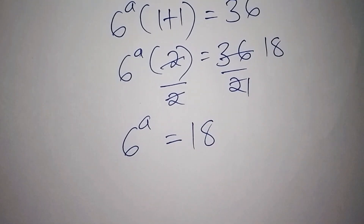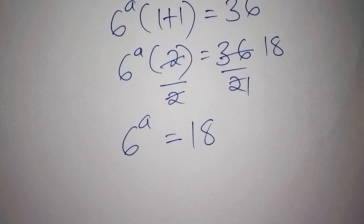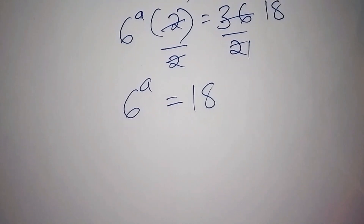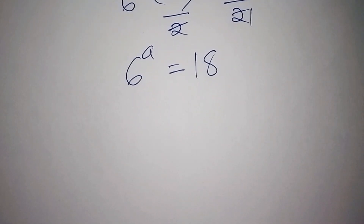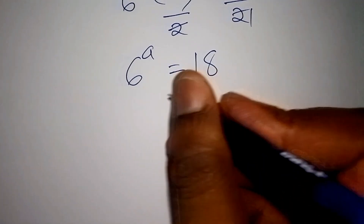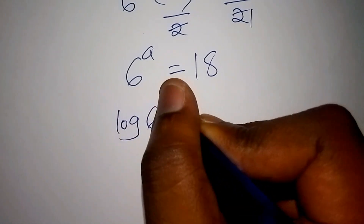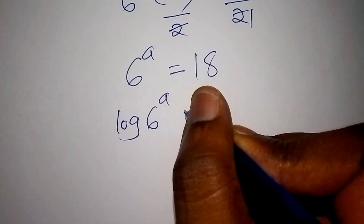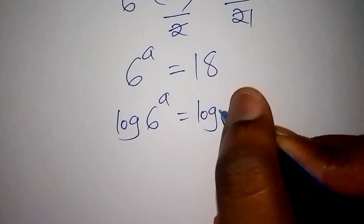So how do we find the value for a? The fastest method is to introduce the log from both sides. We shall have the log of 6 to the power of a is equal to the log of 18.